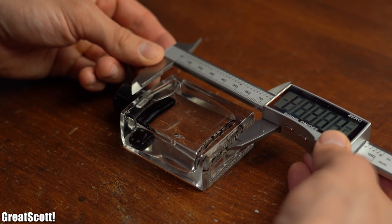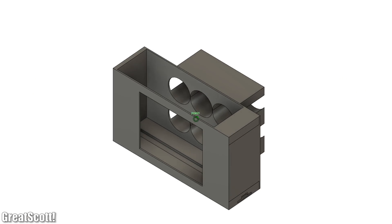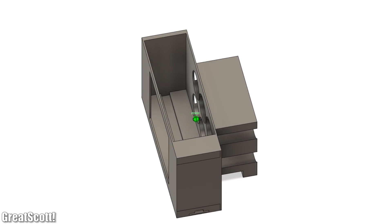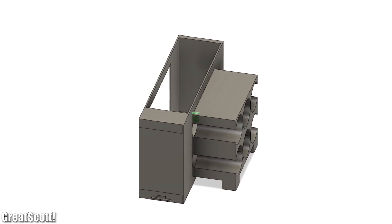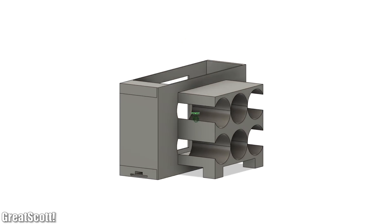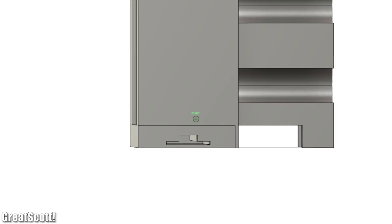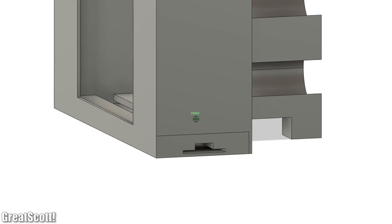Next I took measurements of my flask in order to create this enclosure in Fusion 360. I think it is quite obvious where the flask will sit as well as where the magnet will be positioned but you might be asking yourself what this slot underneath the flask is for.